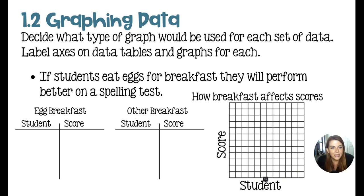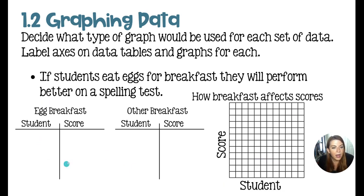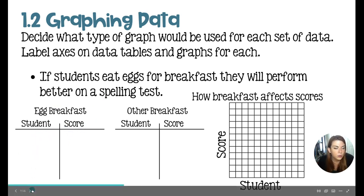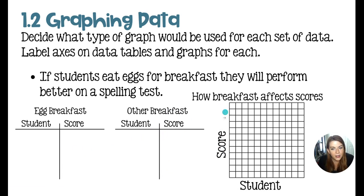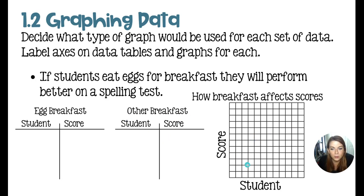The final graph is the students eating eggs for breakfast and the spelling test. I would do a double or triple line graph, depending on the other breakfasts being tested. We'd record each student — maybe student one through five — for the egg breakfast and whatever the other breakfast is. Score goes on the y-axis and the student information goes on the x-axis. You might graph the egg breakfast in yellow and the other breakfast in a different color, or code the data points with circles, squares, and triangles. A double line graph would be perfect for this data set.